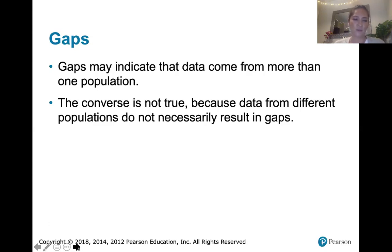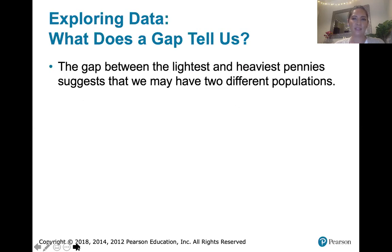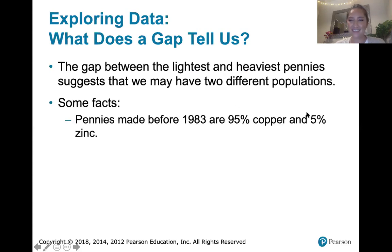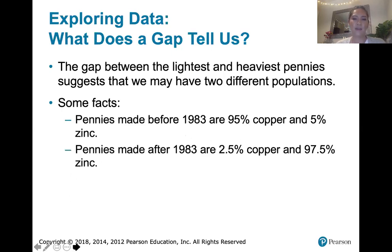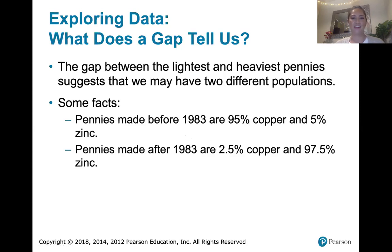That happens to be true with regard to our pennies. Pennies made before 1983 were 95% copper and 5% zinc, and after 1983 they were made with 2.5% copper and 97.5% zinc. The weight differences between copper and zinc mean that pennies made before 1983 generally weigh a different amount than pennies made after 1983. That's what we're seeing when we see that big gap in our frequency distribution.